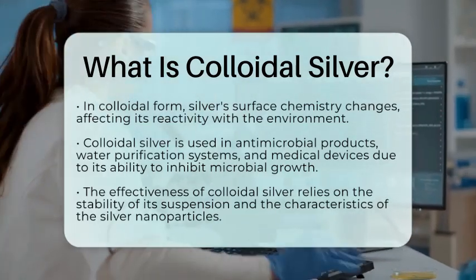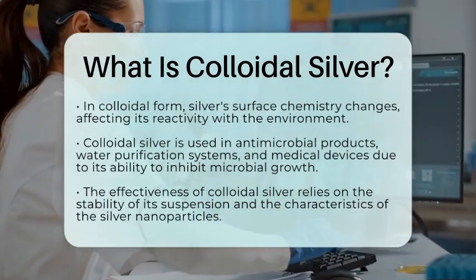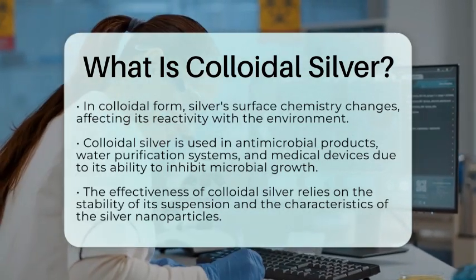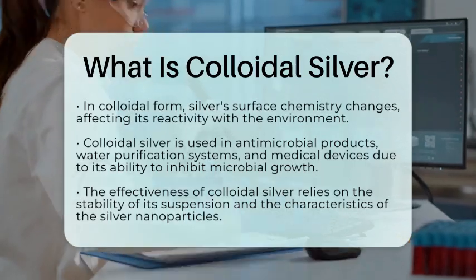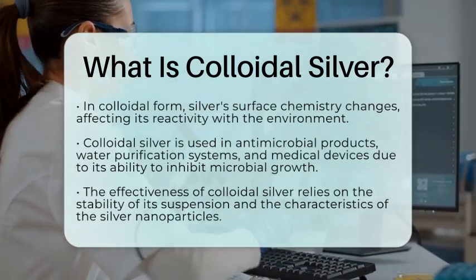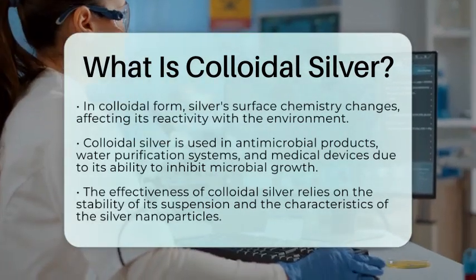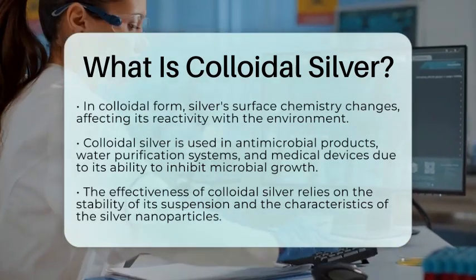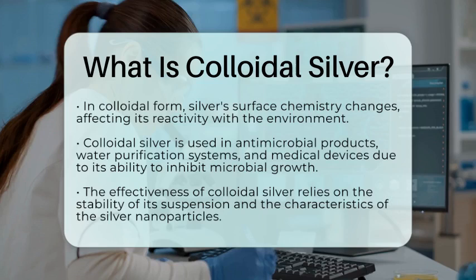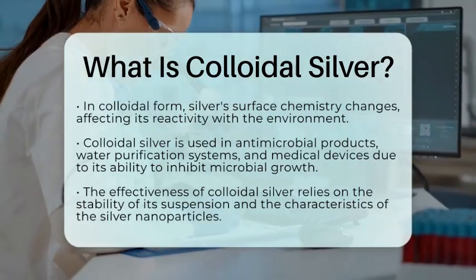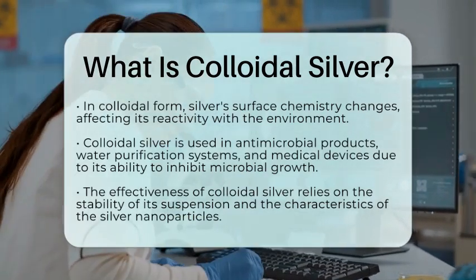Colloidal silver has practical uses too. It is often found in antimicrobial products, water purification systems, and medical devices. Its ability to inhibit microbial growth makes it a popular choice in these applications. The effectiveness of colloidal silver depends on the stability of its suspension and the size and shape of the silver nanoparticles. In summary, colloidal silver is a unique form of silver made up of suspended nanoscale particles in water. Its distinct physical and chemical properties set it apart from both bulk silver and ionic silver solutions.